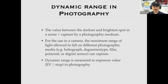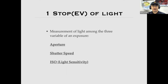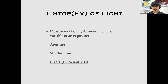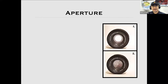Dynamic range is measured in exposure value — we call it EV — or 'stop' in photography. One stop of light, or one EV, can be measured among the three variables of an exposure: aperture, shutter speed, or ISO, which measures the light sensitivity of film or a digital sensor.